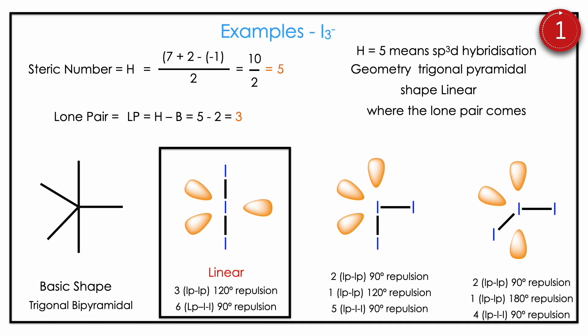Then a more complicated example: I3−. Here both atoms are iodine — central metal atom is iodine, bonded is iodine, and charge is −1. Iodine valence is 7, bonded atoms are 2, charge is −1. H = (7 + 2 − (−1)) / 2 = 10 / 2 = 5. Lone pair = 5 − 2 = 3. As already predicted, lone pairs always come equatorial. With 3 lone pairs equatorial and 2 bonded atoms axial, the bonded atoms are in a straight line. So geometry is trigonal bipyramidal and shape is linear.